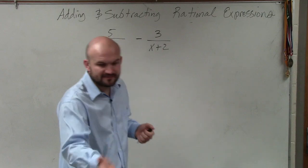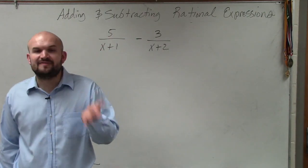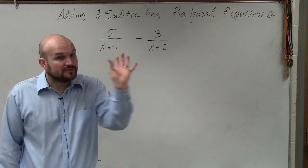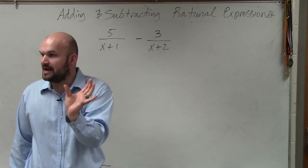Now, when we looked and found the LCD, 30 ended up being what the product of 5 and 6 was, correct? So if you take your two denominators and multiply them, you will obtain a common denominator, correct?